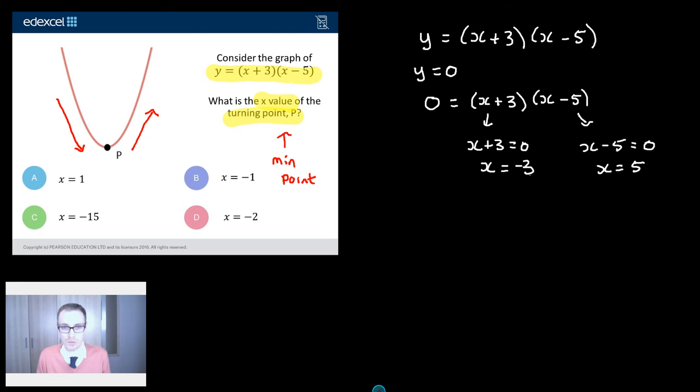Now the point of doing that is we now know that when x equals minus 3, y is equal to 0 and when x equals 5, y is equal to 0. So that tells me that at minus 3 and 5 this graph must cross the x-axis and that is the key to doing this question.